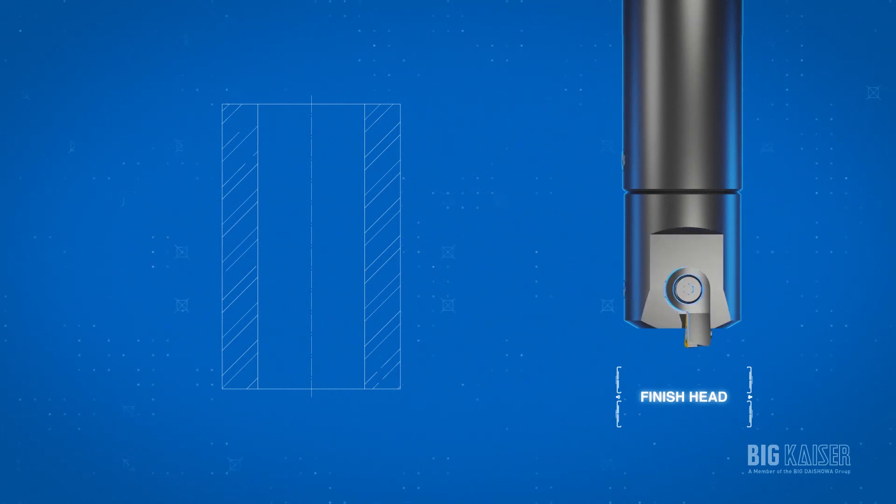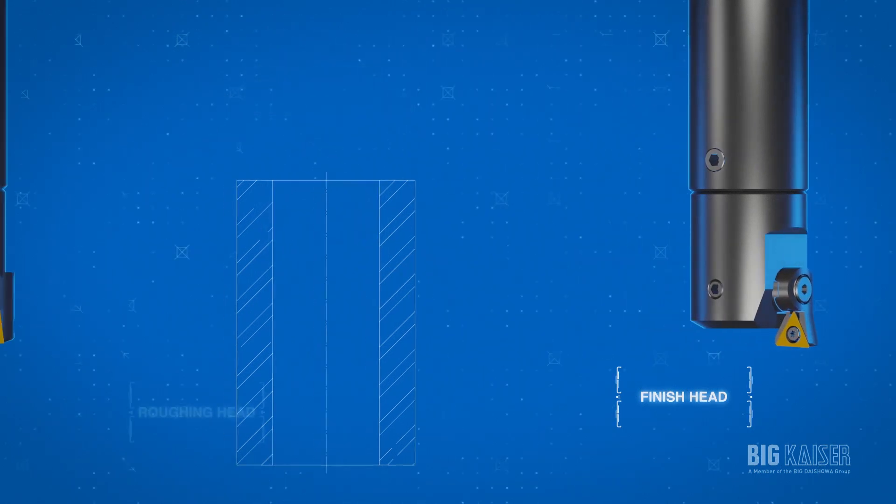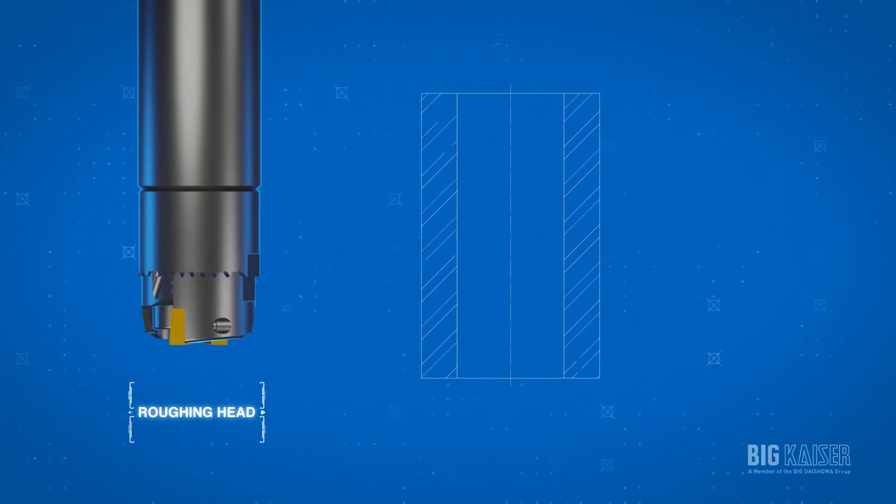Finished boring heads aren't usually designed to take out more than forty thousandths of an inch stock on diameter. If the initial hole has more stock than this, a roughing head should be used to open it up.